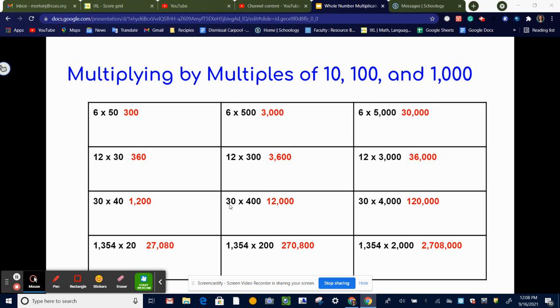So again, we're going to say 3 times 4 is 12, and then you multiply by 1, 2, add on the three zeros.